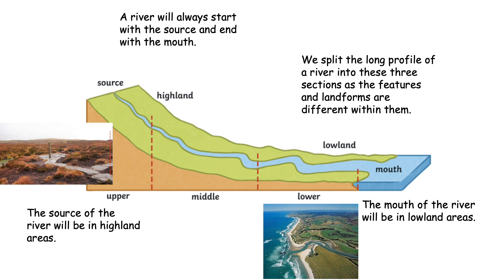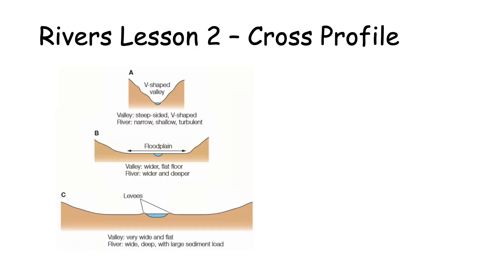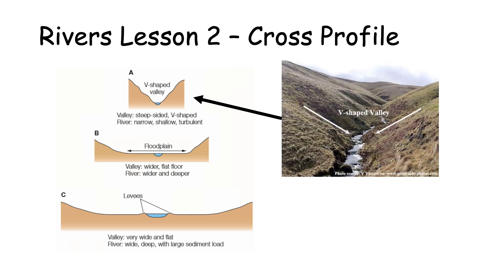Your first task for this lesson is to draw the cross profiles. A cross profile is like splitting the river so we can see inside it, and there are three diagrams I want you to draw. Diagram A on the screen is showing the upper course of the long profile. You can see that in real life, if you were to go up to a highland area, you would see a V-shaped valley with a small river going through the middle. As it says below the diagram: steep-sided, V-shaped, and the river is narrow, shallow, and turbulent — meaning the water appears to move quite quickly, but because it's moving over lots of rocks, it looks turbulent.